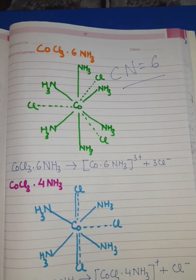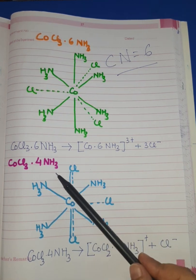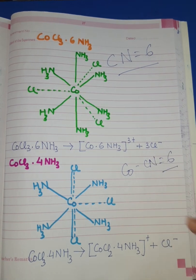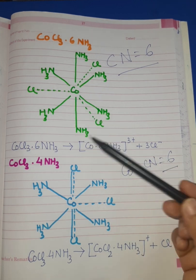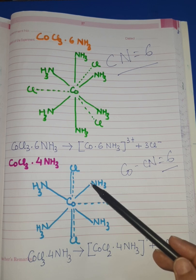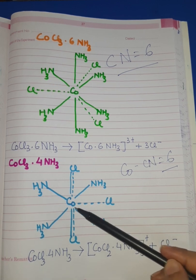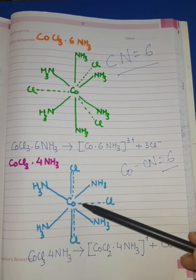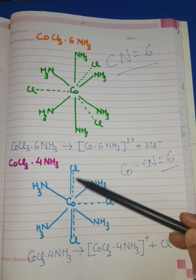Now let us look at the second example, CoCl₃·4NH₃. Since the coordination number of cobalt is 6, cobalt needs to form 6 secondary valencies. Out of 6, it is clear that 4 ammonia molecules are bonded with cobalt via secondary valency. There are 3 Cl⁻ present, which will definitely be bonded via primary valency, as shown by dotted lines with all 3 Cl bonded to cobalt via primary valency.